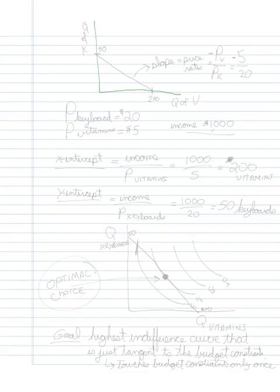So, let's keep the same understanding of space here. Quantity of vitamins. Quantity of keyboards. And, let's say that a keyboard is $20. Let's say that vitamins cost $5. So those are my two prices here. The price of my keyboards, and the price of my vitamins. The other element we need here is we need to know what our income is. Let's say that our income is equal to $1,000.